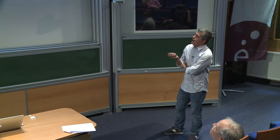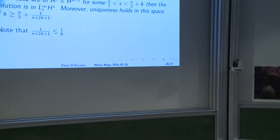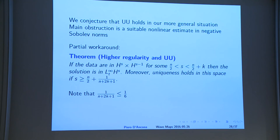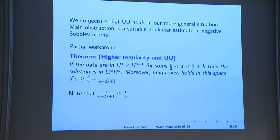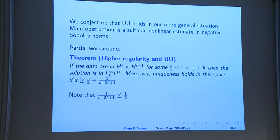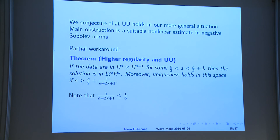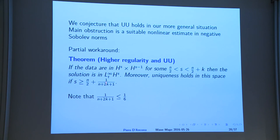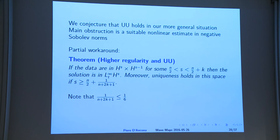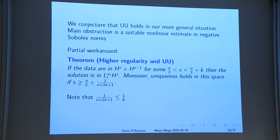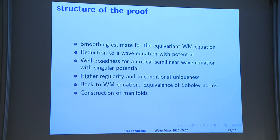What you can do by implementing the same techniques carefully — once you have a higher regularity result, which is not difficult — is the following: if the initial data are slightly more regular than the critical space up to some order determined by the singularity in the non-linear term, then the regularity is preserved. And if the initial data are slightly more regular than the critical space, you have unconditional uniqueness in this space. The improvement is not very large, not more than one-sixth, but not arbitrarily small either.